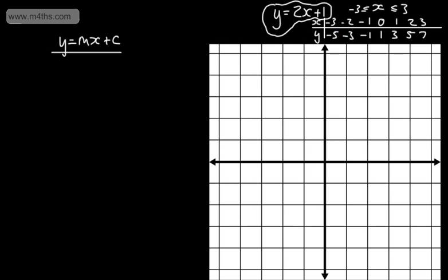These form a straight line. Plotting the points: x = -3, y = -5; x = -2, y = -3; x = -1, y = -1; x = 0, y = 1; x = 1, y = 3; x = 2, y = 5. We could also plot (3, 7). This is the graph of y = 2x + 1, shown for x from -3 to 2. If we're not told values of x, the line continues infinitely in both directions.